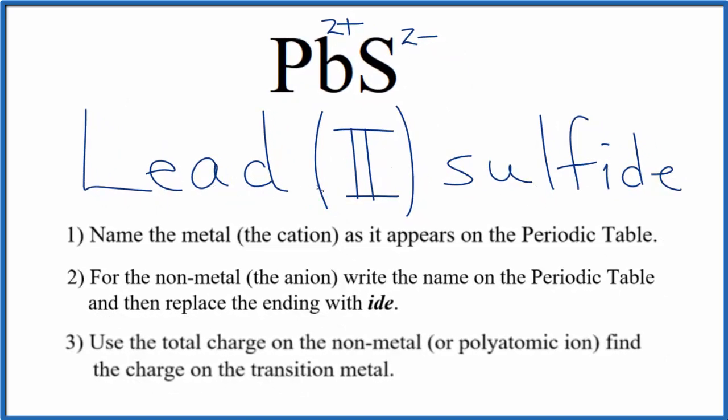If you were given the name lead two sulfide and asked to write the formula, you know the lead would be two plus because of the Roman numeral here. Then the sulfide ion is always two minus, so you need one lead and one sulfur for the net charge to be zero.